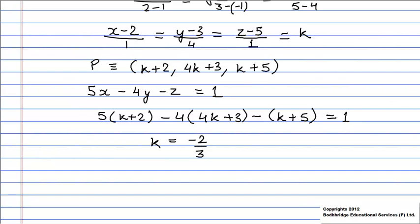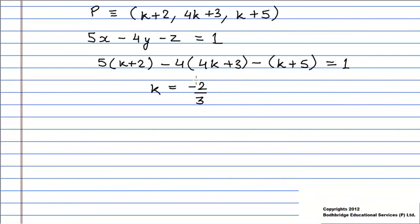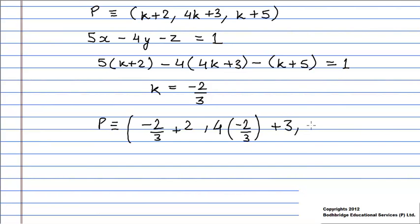So the point P is given by (-2/3 + 2, 4(-2/3) + 3, -2/3 + 5), which gives us the point P as (4/3, 1/3, 13/3).